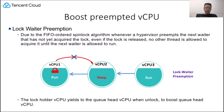Next is boosting the queued waiter vCPU. Due to the FIFO order spinlock algorithm, whenever a hypervisor preempts the next waiter that has not yet acquired a lock, even if the lock is released, no other thread is allowed to acquire it until the next waiter is scheduled to run. Over-commitment increases the likelihood that the queued waiter vCPU may have been preempted and not actively spinning. Rescheduling the queued waiter vCPU timely to acquire the lock can get better performance than just depending on lock stealing in an over-subscribed scenario. The lock holder vCPU yields to the queued waiter vCPU when unlocked, to boost the queued waiter vCPU which is involuntarily preempted or voluntarily halted due to failing to acquire the lock after a short spin in the guest.